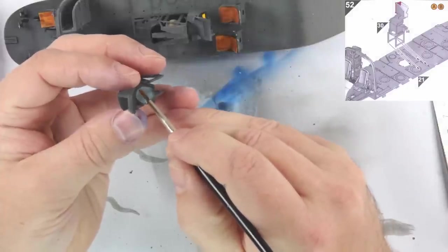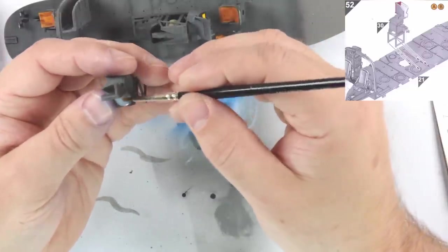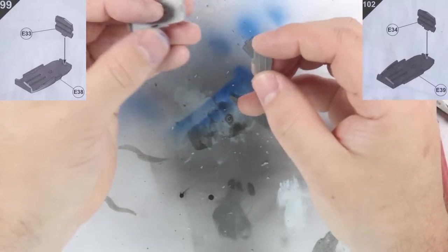Speaking of the sonar station, the decal for the screen was put on before it was attached - I used the inactive version. Interior assembled, I moved on to the landing pods.